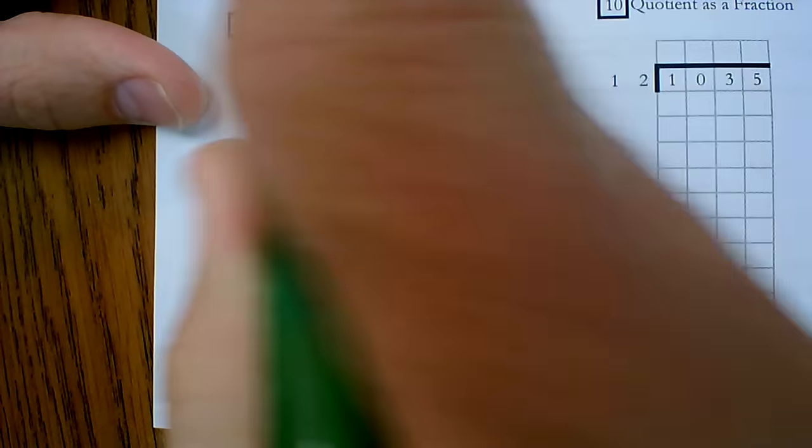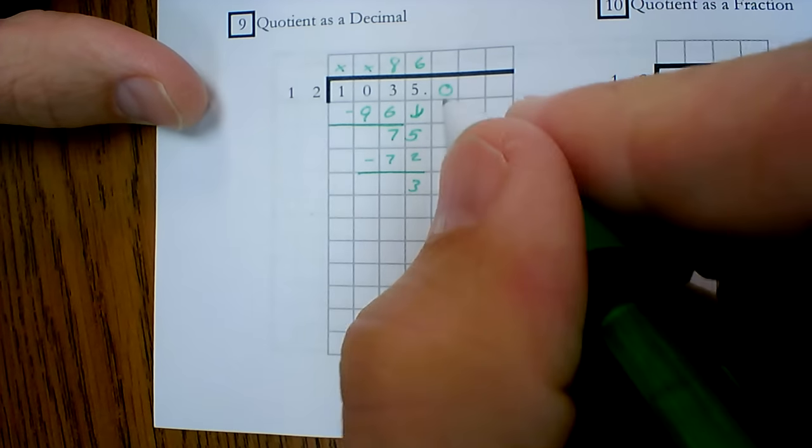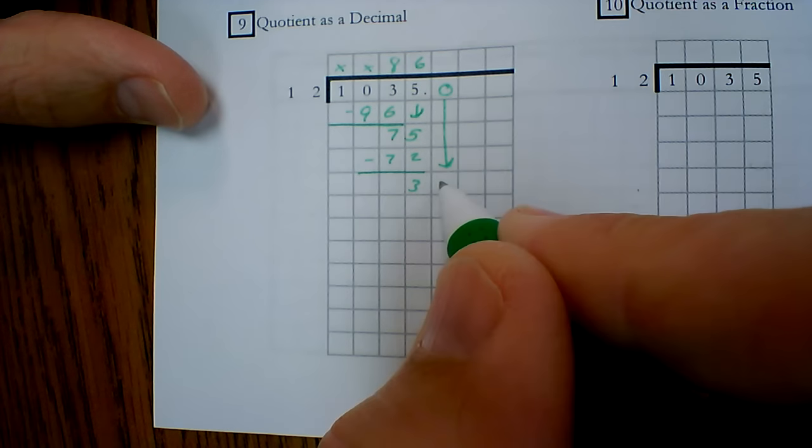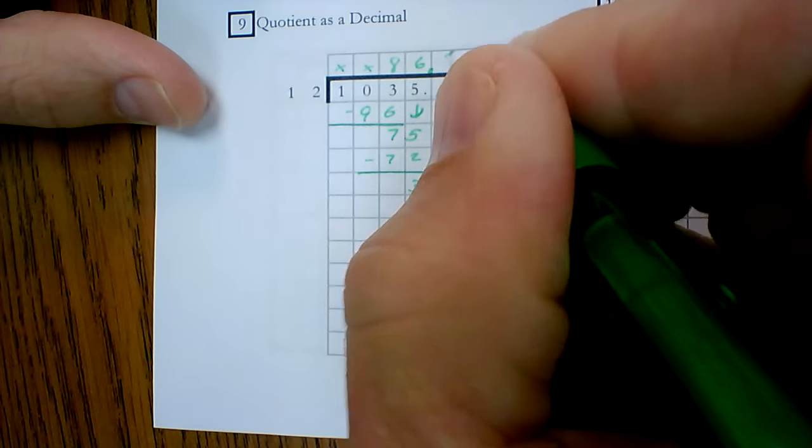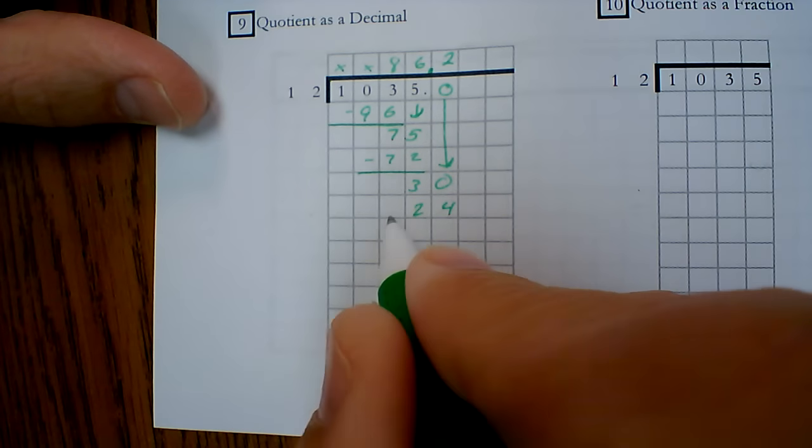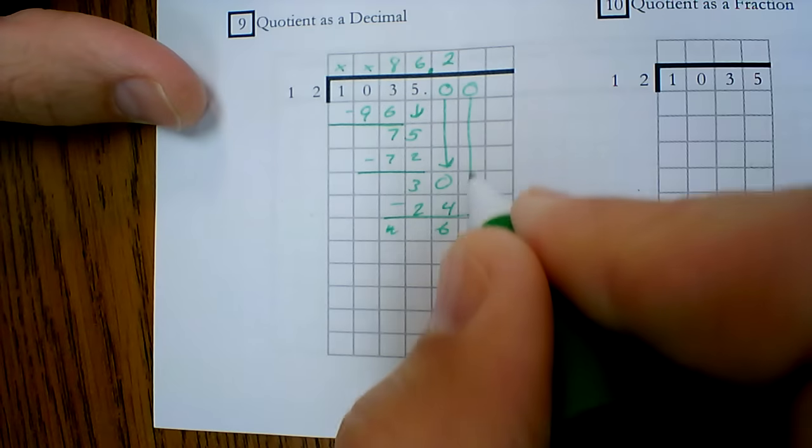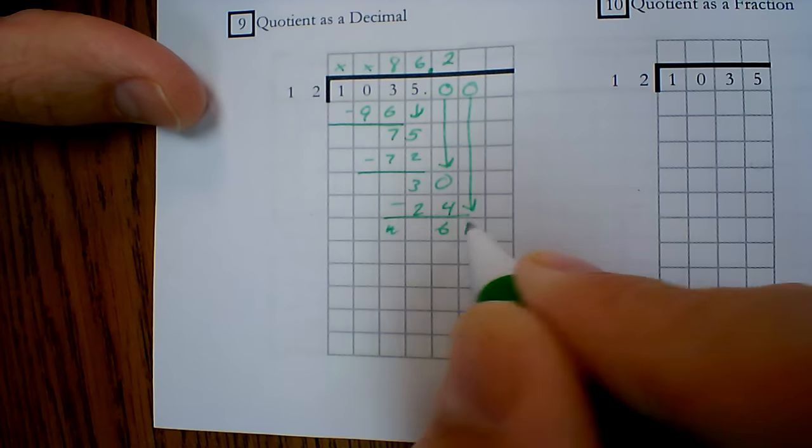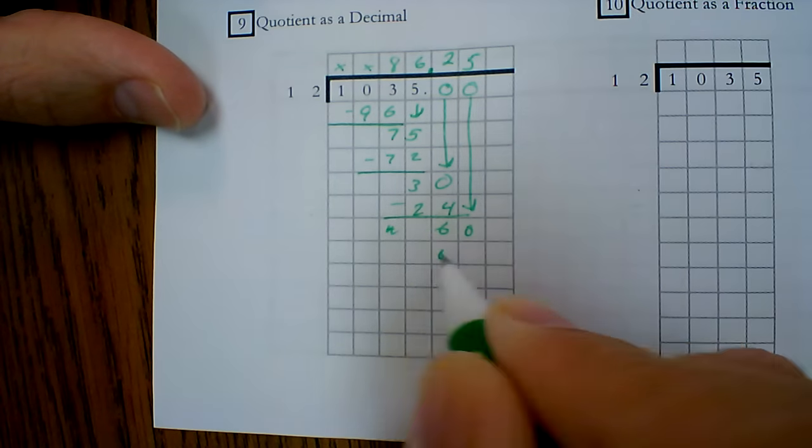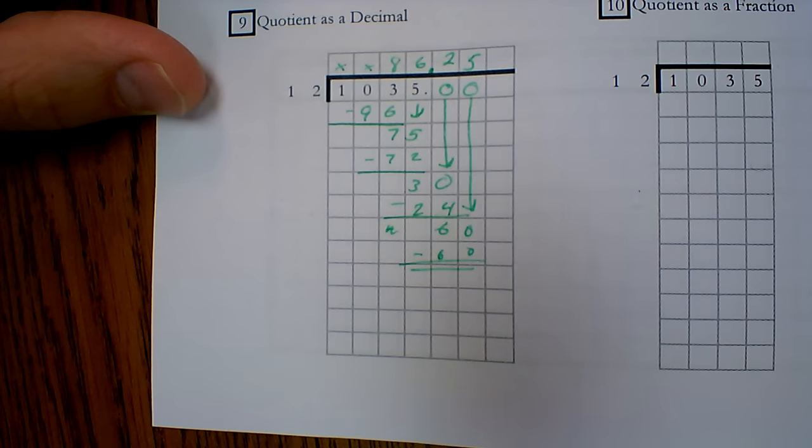Subtract. It's not finished yet, and I need it as a decimal. Need it as a decimal. So I've got to add a zero. Bring it down. I know that's two groups. That's 24. Add another zero. Bring it down. That's 5, 60, 86, and 25 hundredths.